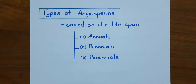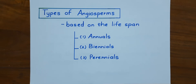Angiosperms, or flowering plants, can be classified based on their lifespan. We find three types here: annuals, biennials, and perennials. So let's see them one by one.